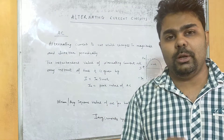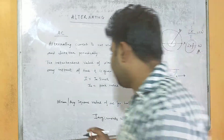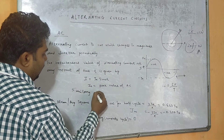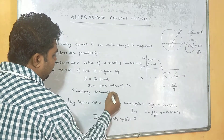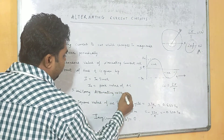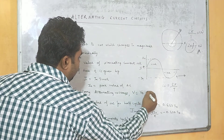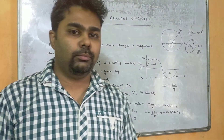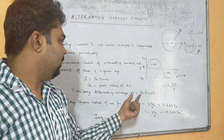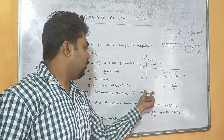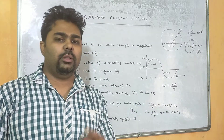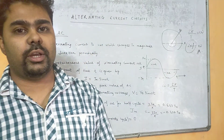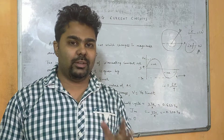Similarly for alternating voltage, we get V equals to V₀ sin(ωt). The peak value of that voltage is V₀. In some books it is written as E equals to E₀ sin(ωt) or V equals to E₀ sin(ωt) — these mean the same thing.